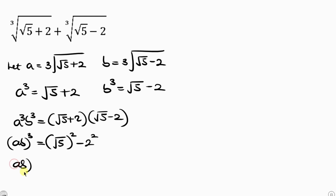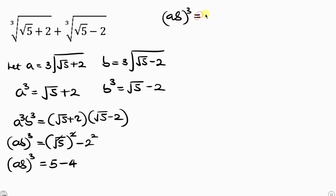So I have AB cubed equal to the result. Notice that the square cancels with the square root, leaving 5 minus the square of 2, which is 4. So 5 minus 4 equals 1, meaning AB cubed equals 1. Taking the cube root of both sides gives AB equal to 1.